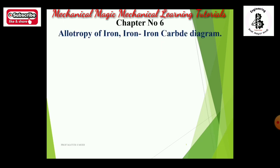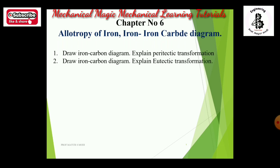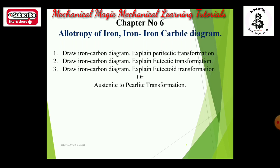Chapter 6: first important question is allotropy of iron, then the iron-carbon diagram — 100 percent definite chance. Questions include: draw the iron-carbon diagram and explain the peritectic transformation; draw the iron-carbon diagram and explain the eutectic transformation; draw the iron-carbon diagram and explain the eutectoid transformation or austenite-to-pearlite transformation; draw the iron-carbon diagram and discuss 0.8 percentage carbon or eutectoid steel; and state the critical reactions of the iron-carbon phase diagram. One 7-mark theory from this chapter is certain.